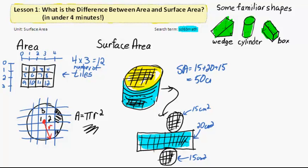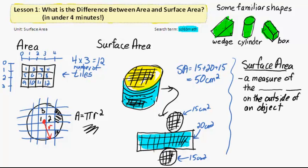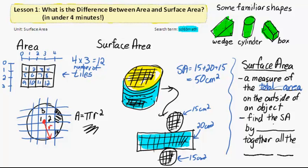Again, 50 tiles, 50 centimeters squared. Surface area is a measure of the total area on the outside of an object. Find the surface area by adding together all the outside faces.